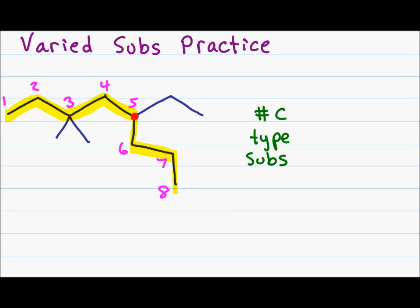I have eight carbons in my parent chain giving me oct, and only single bonds giving me ane. On carbon three I have two identical methyl substituents. I can't write 3-methyl or even 3-dimethyl because it doesn't specify the number of the second one. Instead I write this as 3,3-dimethyl.